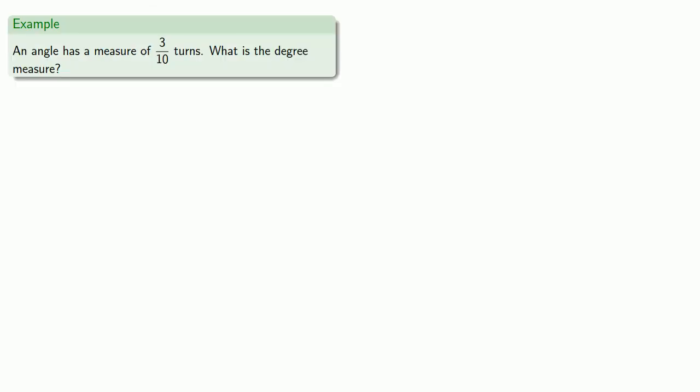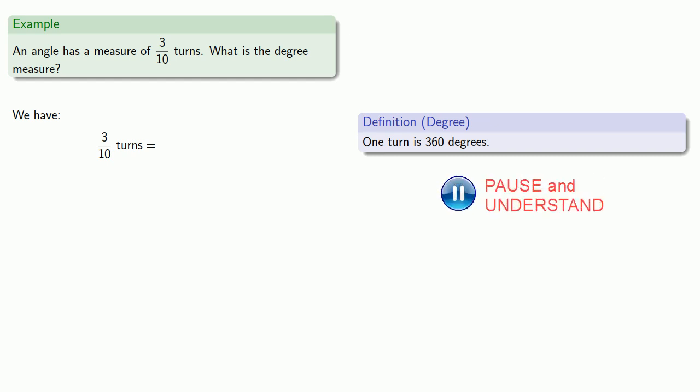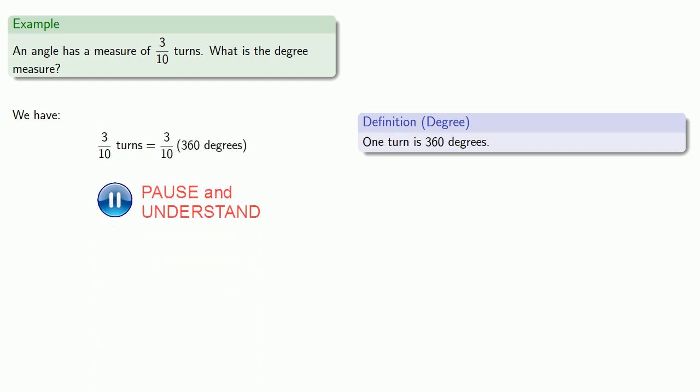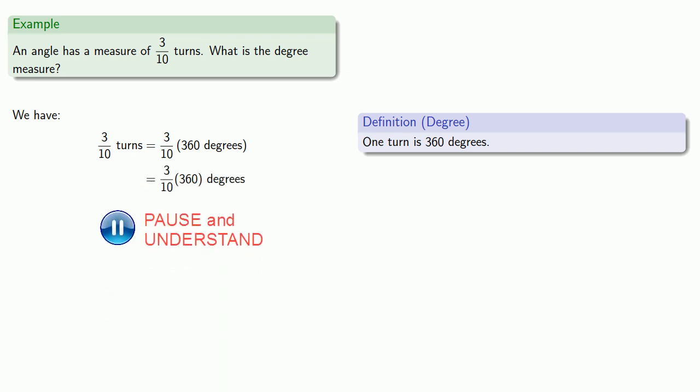And this will help us avoid fractions. So, for example, suppose we have an angle with a measure of three-tenths of a turn. What's our degree measure? So we have three-tenths of a turn. But since one turn is 360 degrees, then any time I see a turn, I can replace it with 360 degrees. So I have three-tenths of 360 degrees. And that's really three-tenths of 360, which gives us 108 degrees.